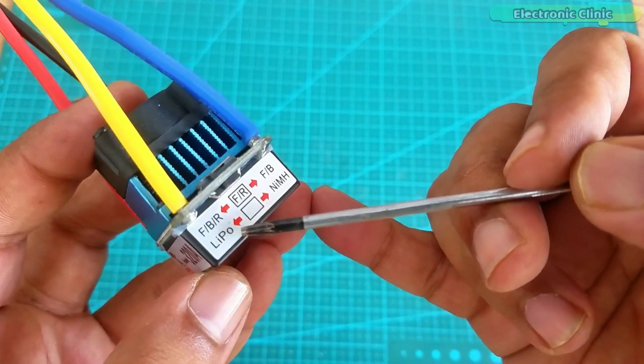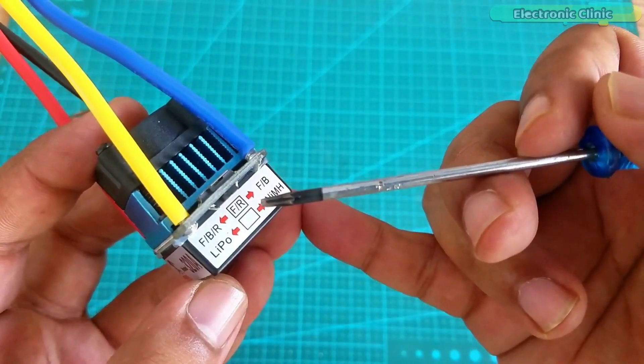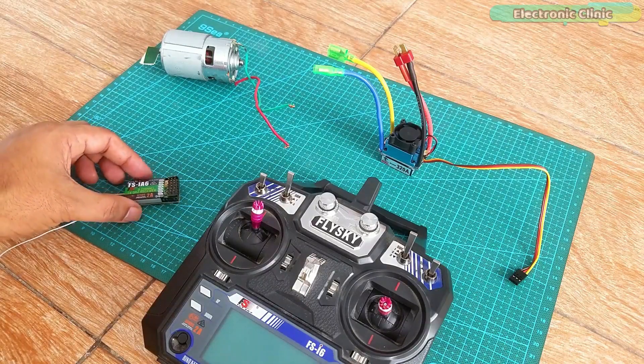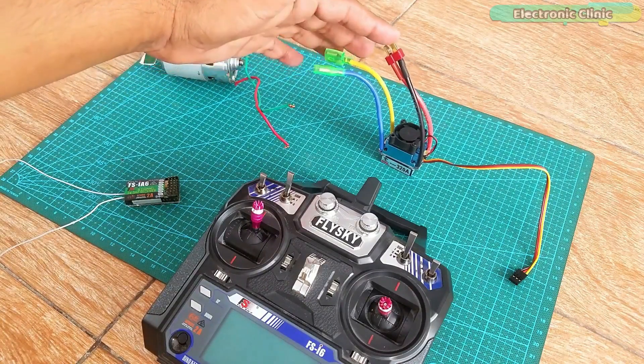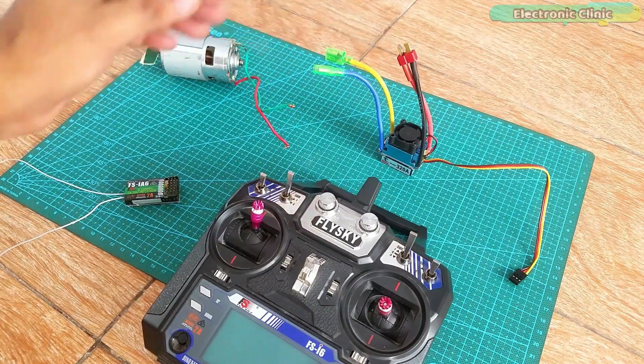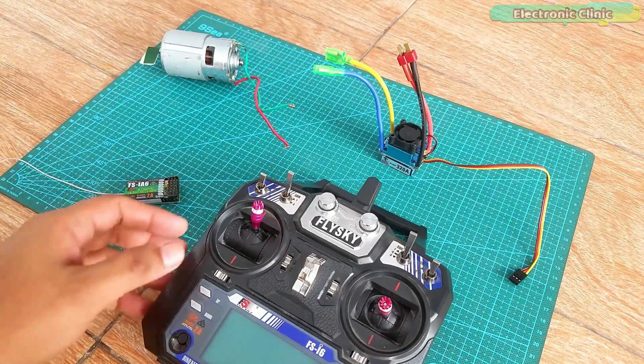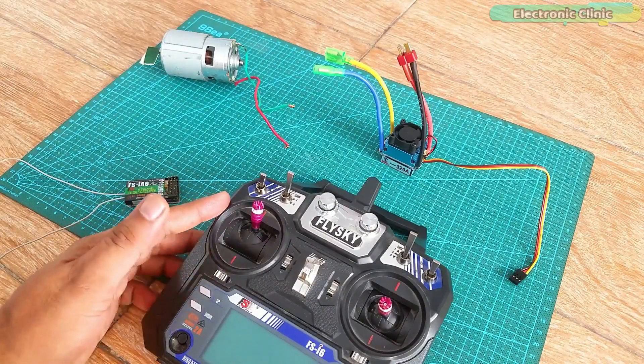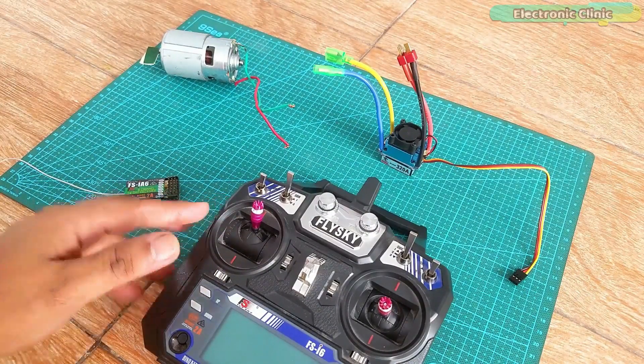Now let's go ahead and start the interfacing. I am going to use the Flysky FS-i6 receiver with the motor driver and then we will use the Flysky transmitter to control the forward and reverse movement of the 775 motor.